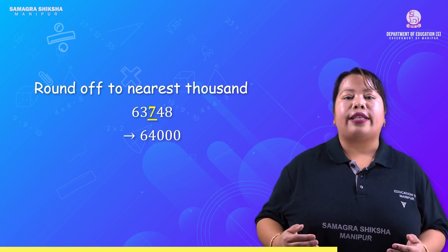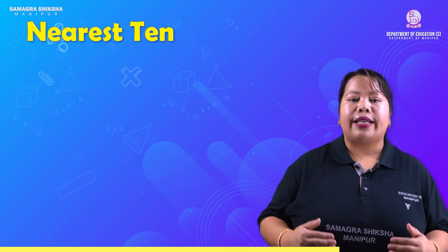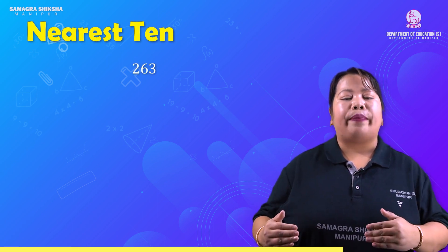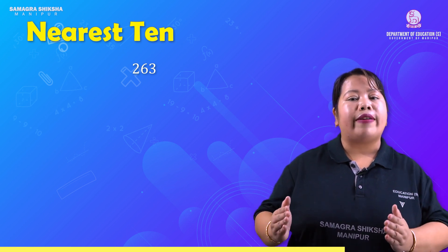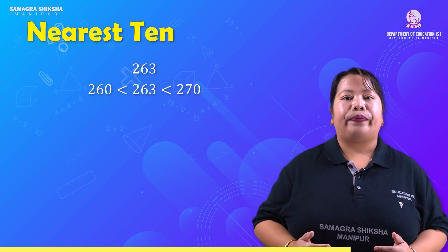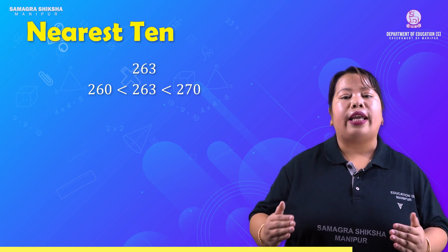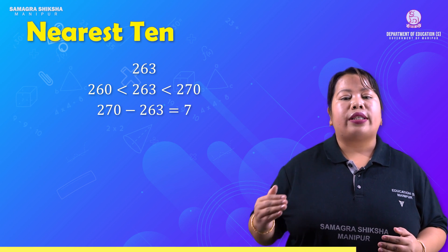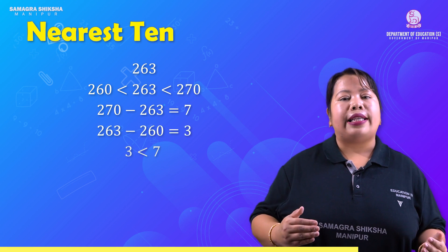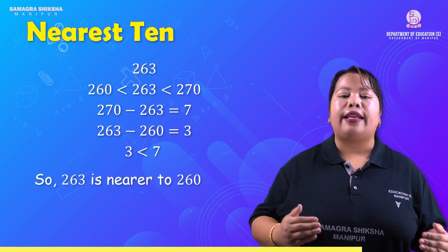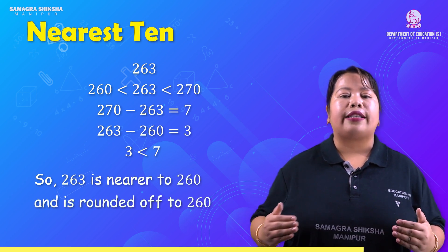Now using the number line method: for 263, round to the nearest ten. 263 is between 260 and 270. 270 minus 263 gives 7; 263 minus 260 gives 3. Since 3 is less than 7, 263 is nearer to 260. Therefore 263 is rounded off to 260.